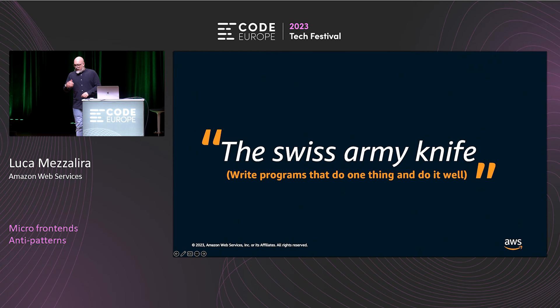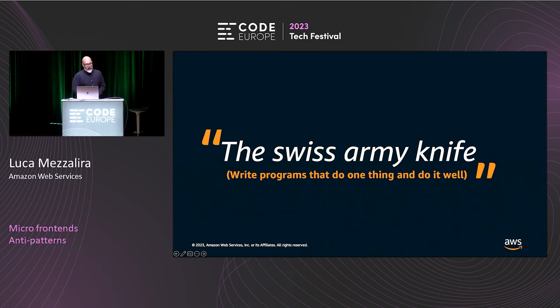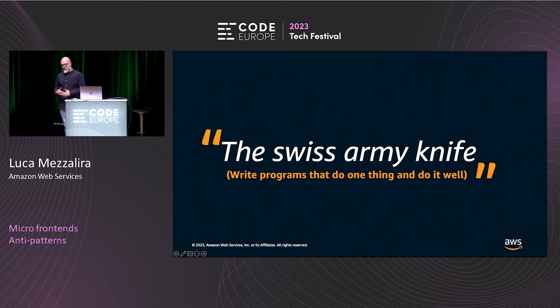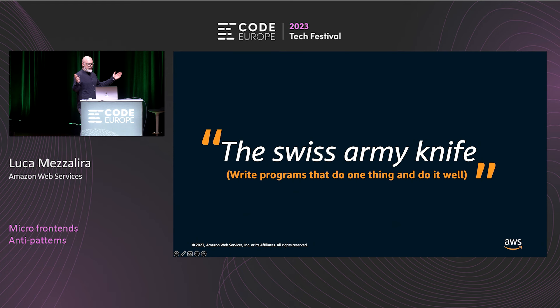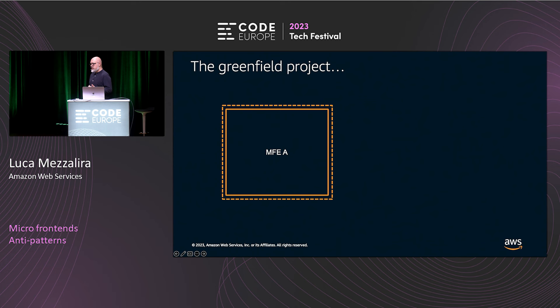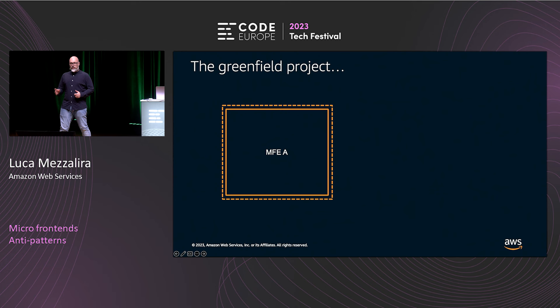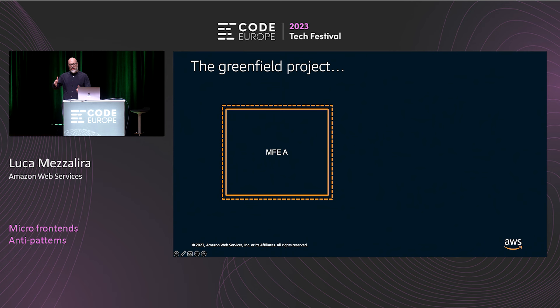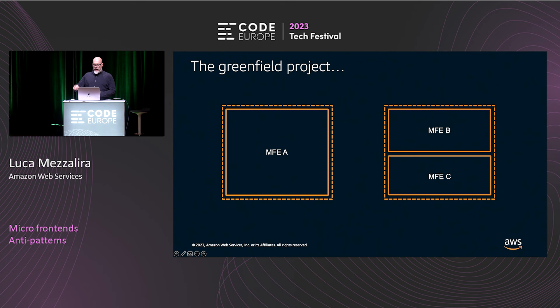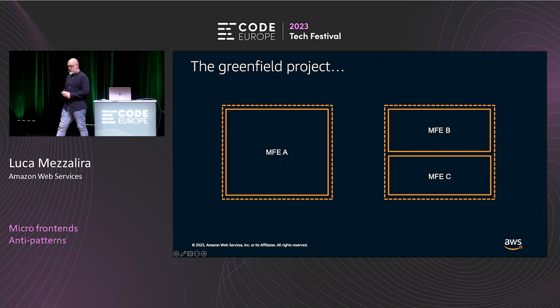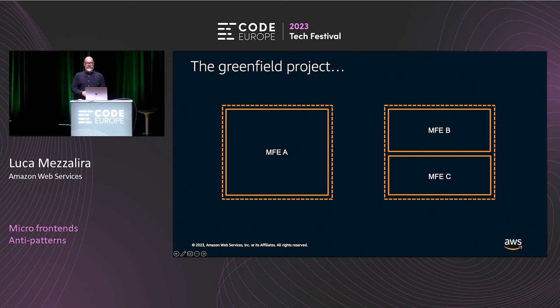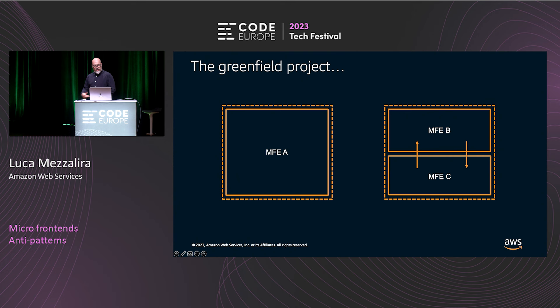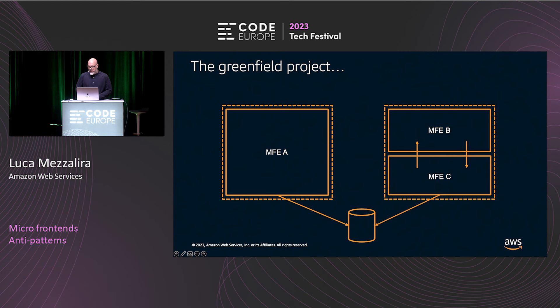The next anti-pattern is called the Swiss Army Knife — or 'write programs that do one thing and do it well.' I love Unix design: a program that does one thing and connects perfectly inside the ecosystem. Now let's take a real example. Imagine a company that started a greenfield project with micro-frontends. There's a container — usually an application shell — that loads what they call the vertical micro-frontend: one micro-frontend representing one or multiple pages. Then we need to build another view containing two micro-frontends, because different subdomains need to communicate and display inside the same view.